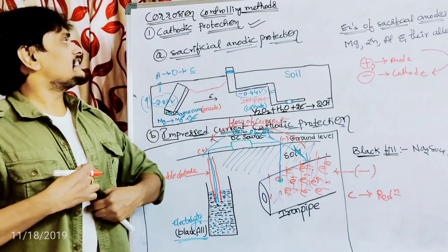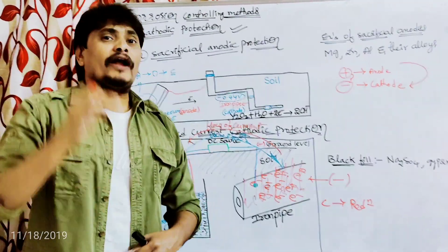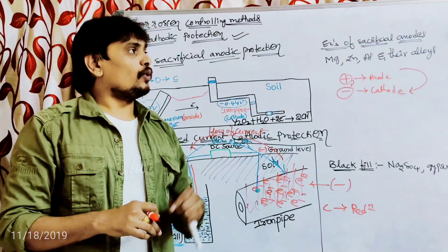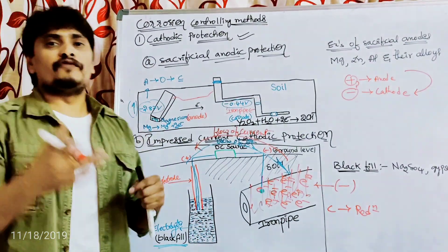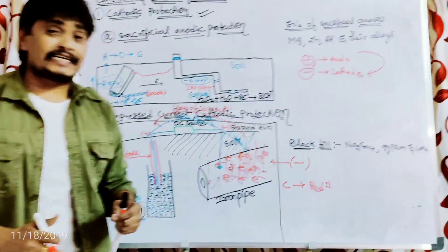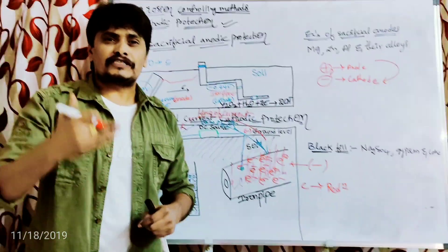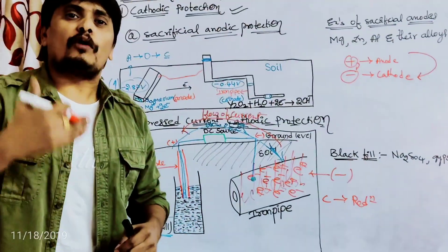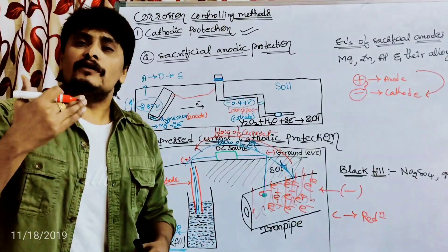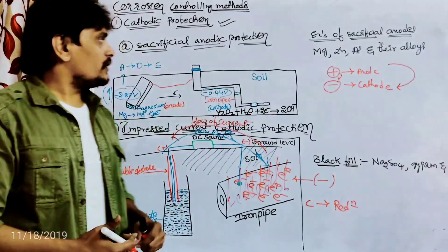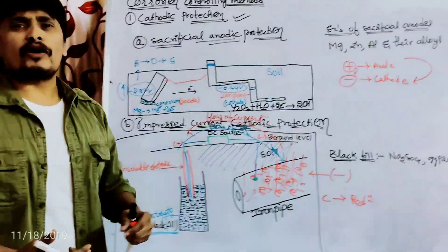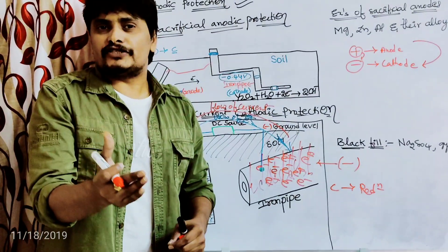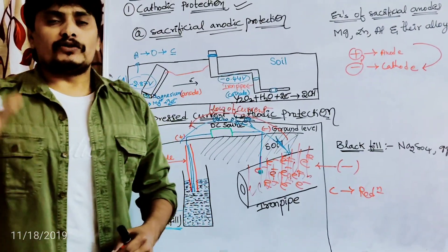This is about cathodic protection as a corrosion controlling method. In the next video, I will explain about surface coatings — by means of surface coatings, we can also avoid or control or prevent corrosion. I hope you understood this concept, which is very important from the examination point of view in engineering chemistry. Thanks for watching, students.